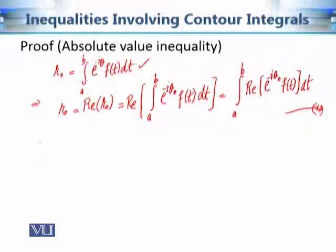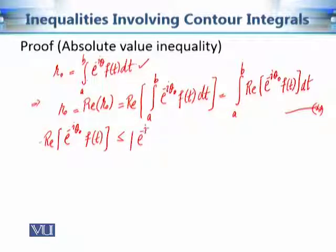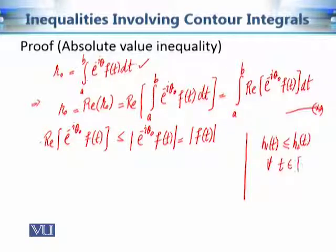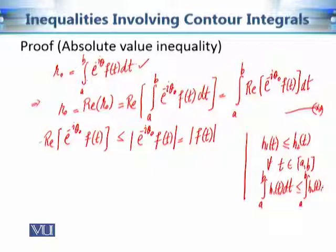Now we know that the real part of a complex number is less than or equal to its modulus. So the real part of e^(-iθ₀)·f(t) is less than or equal to its modulus. Since the modulus of e^(iθ₀) is 1, this is equal to the modulus of f(t). We also know from real analysis that if h₁(t) ≤ h₂(t) for all t in the domain [a, b], then the integral from a to b of h₁(t) dt is less than or equal to the integral from a to b of h₂(t) dt.